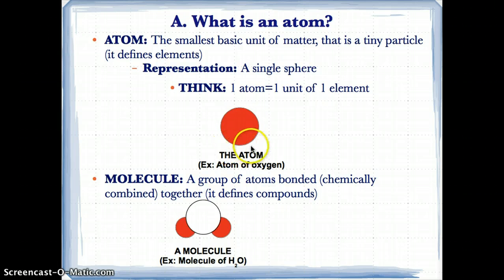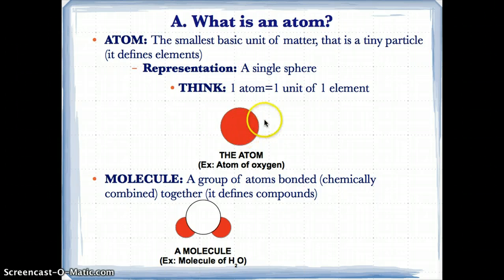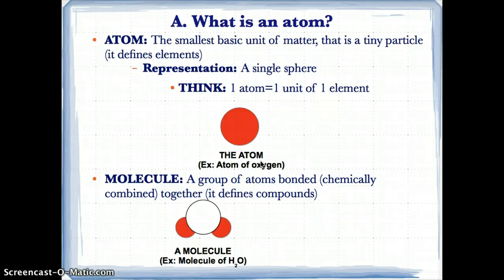For example, let's pretend we have an atom of oxygen. This one atom of oxygen represents one unit of the element oxygen. If you have one atom, you just have an element. Atoms and elements are directly related — an atom is the unit of an element.